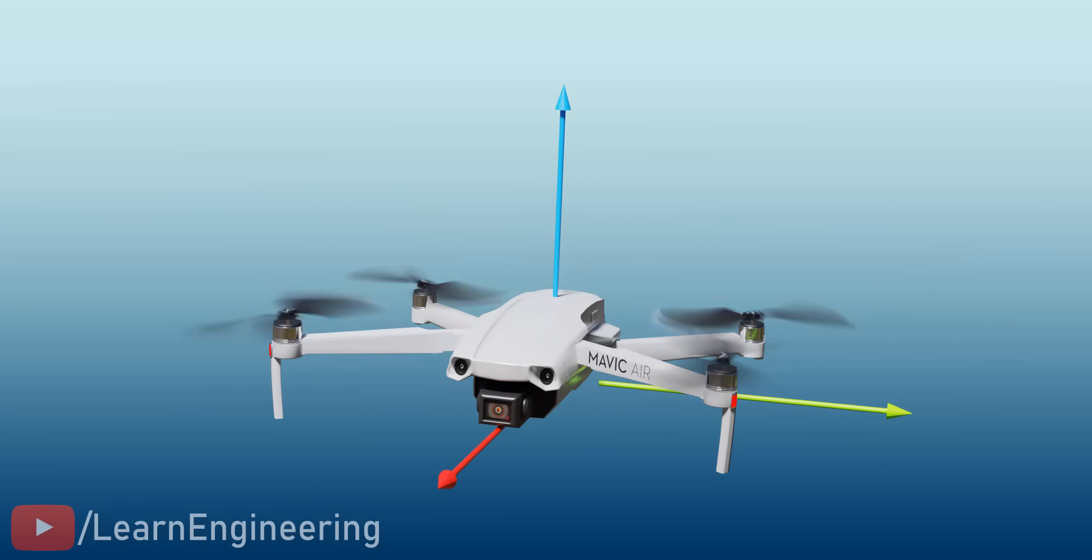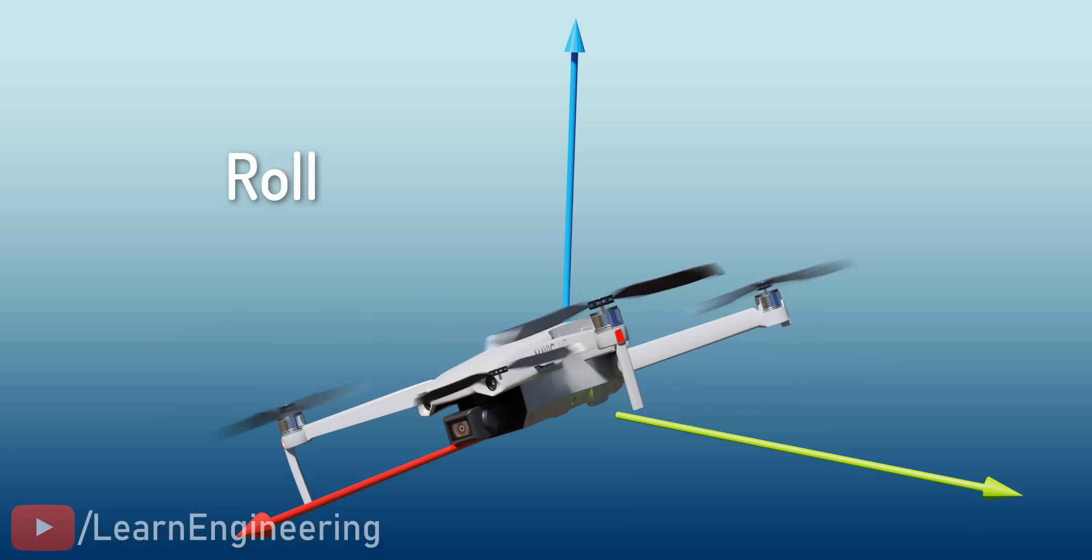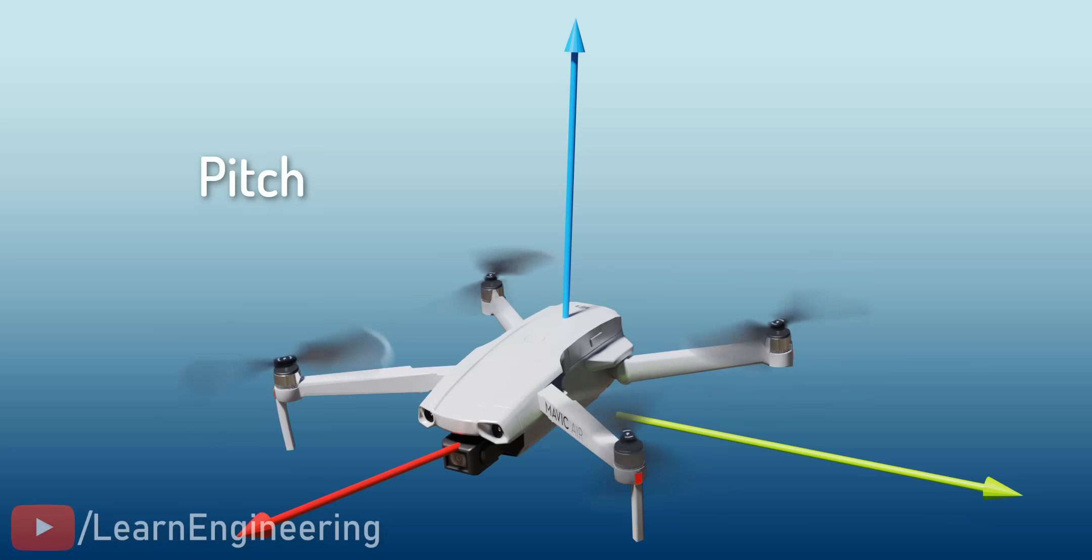The drone can achieve translational motion in three axes. And it can rotate in three dimensions: roll, pitch, and yaw.